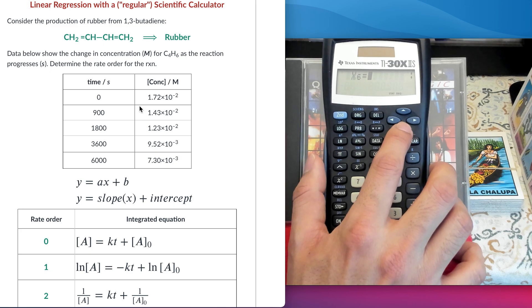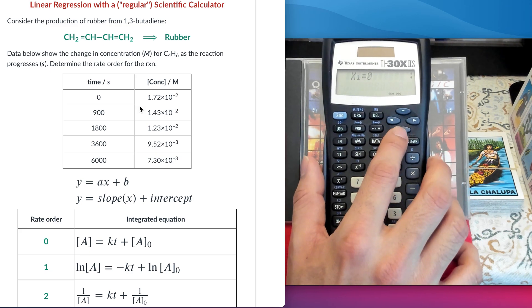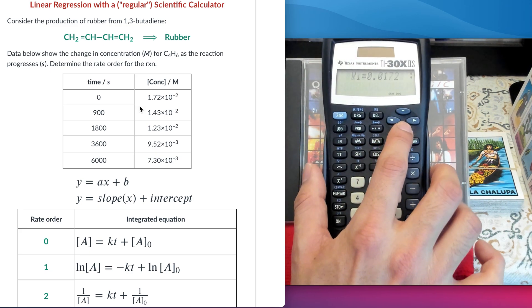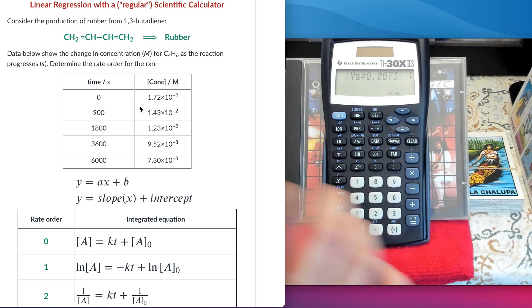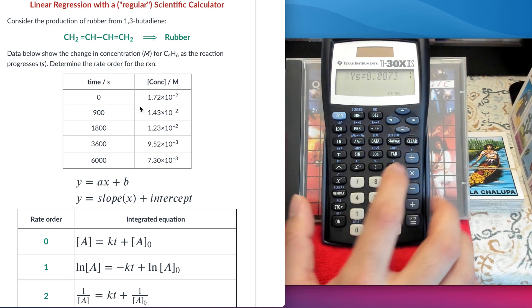I also can go back and check that I have all the points entered correctly. This is the first point, second point, third point, fourth point, fifth point. There you go. Everything's correct.